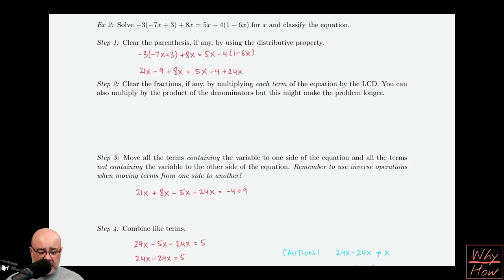We keep combining like terms. 29x minus 5x gives us 24x. That minus another 24x equals 5.